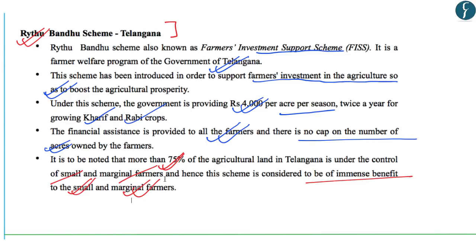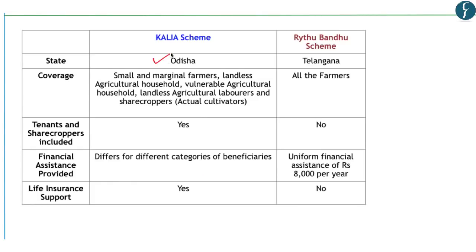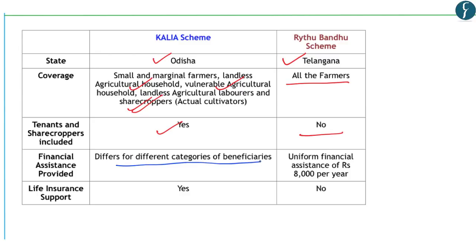Let us see a comparative analysis between the Raithubandhu scheme and the KALIA scheme. KALIA scheme is of the state government of Odisha whereas Raithubandhu scheme is of Telangana. KALIA covers small and marginal farmers, landless agricultural households, vulnerable agricultural households, landless agricultural labourers and sharecroppers, whereas Raithubandhu covers all farmers without any discrimination. KALIA covers tenants and sharecroppers whereas Raithubandhu does not. Financial assistance differs for different categories under KALIA, whereas under Raithubandhu there is a uniform financial assistance of Rs. 8,000 per year. KALIA scheme also provides life insurance support, which is not provided by Raithubandhu.